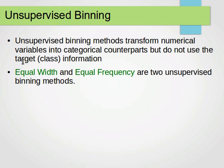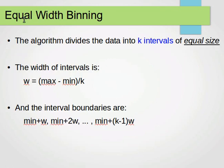We have two methods of unsupervised binning: the first one is equal width binning, and the second one is equal frequency binning. Let's move on and learn what these are with examples. For equal width binning, the name is self-explanatory.